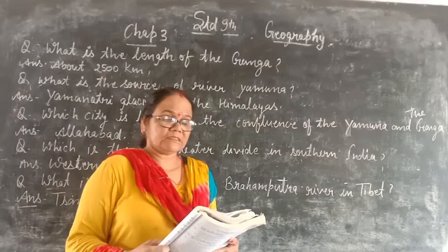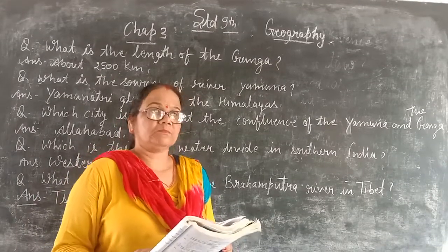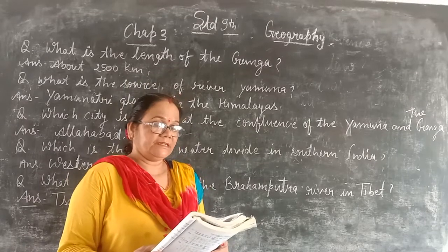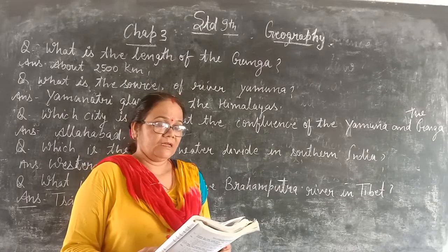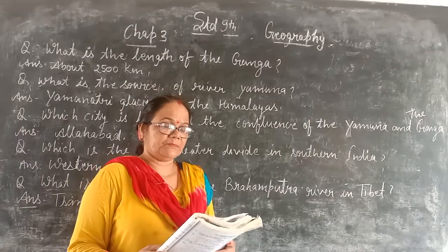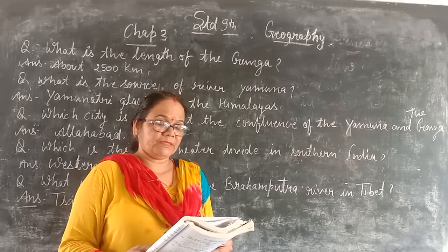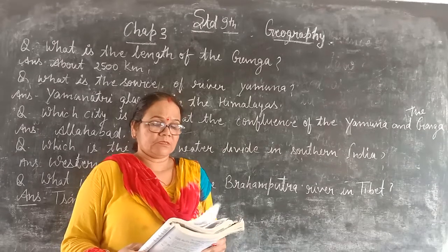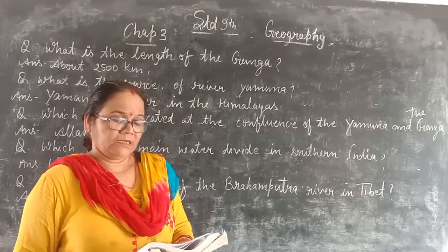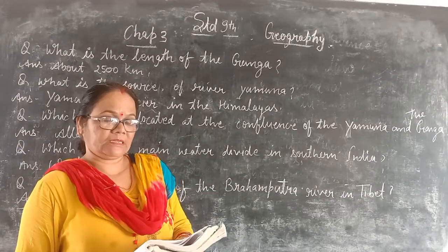From where does the Tapi river arise? The Tapi river arises in the Betul district of Madhya Pradesh. Name the states through which the Tapi river flows: Madhya Pradesh, Gujarat, and Maharashtra.